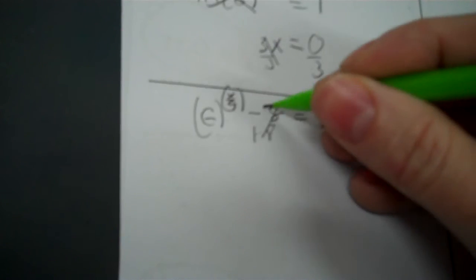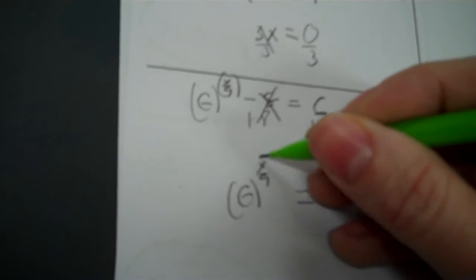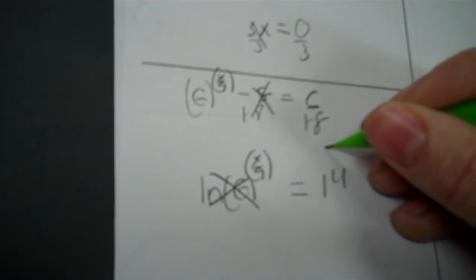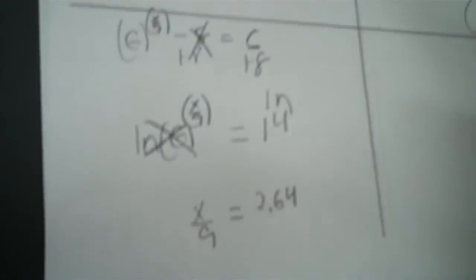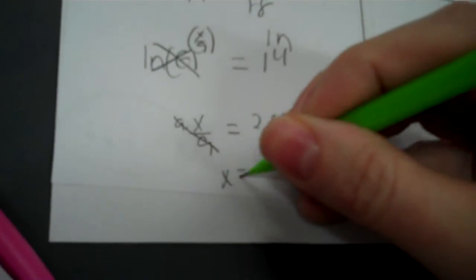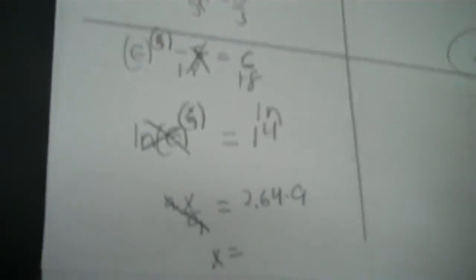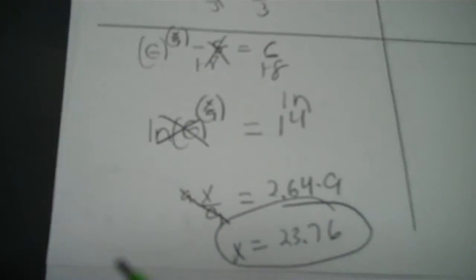Okay. So plus 8. Plus 8. X divided by 9. 6 plus 8 is 14. Now we've got to get rid of E. So I have X divided by 9. And then LN 14. Okay. Just like that. 2.64. And then the opposite of divide by 9 is times 9. And that's my answer. So 2.64 times 9 is 23.76. Okay.